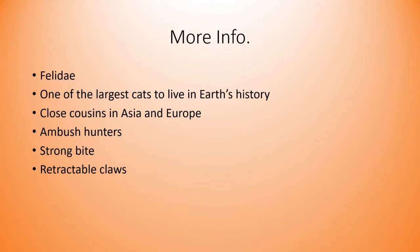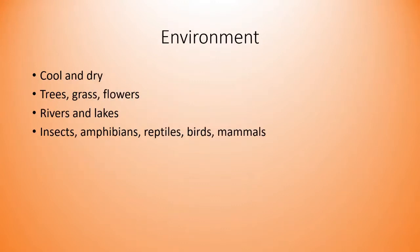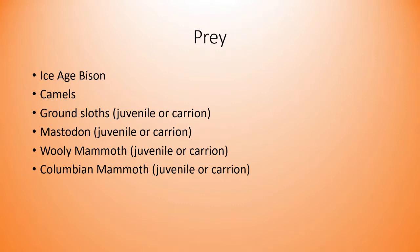The environment the American lion lived in was cool and dry, with lots of trees, grass, flowers, rivers, and lakes. Other animals living there included insects, amphibians, reptiles, birds, and of course mammals. Most commonly, the American lion would have encountered the megafauna of the ice age. Its favorite prey was ice age bison.